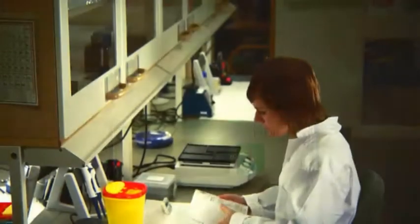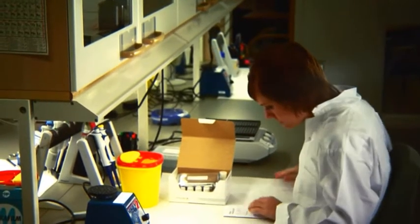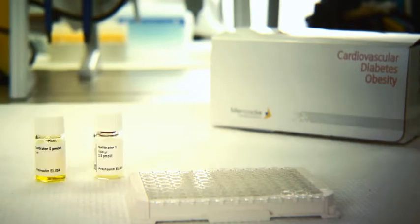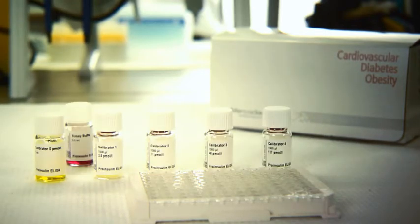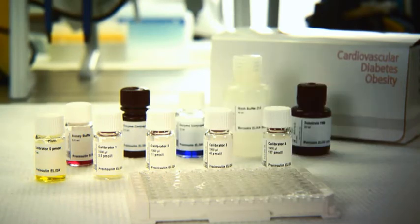In this demonstration, we will perform a pro-insulin ELISA. Inside the kit, you will find the directions for use, a plate and kit-specific components such as calibrators, assay buffer, enzyme conjugate, enzyme conjugate buffer, wash buffer, substrate TMB and stop solution.